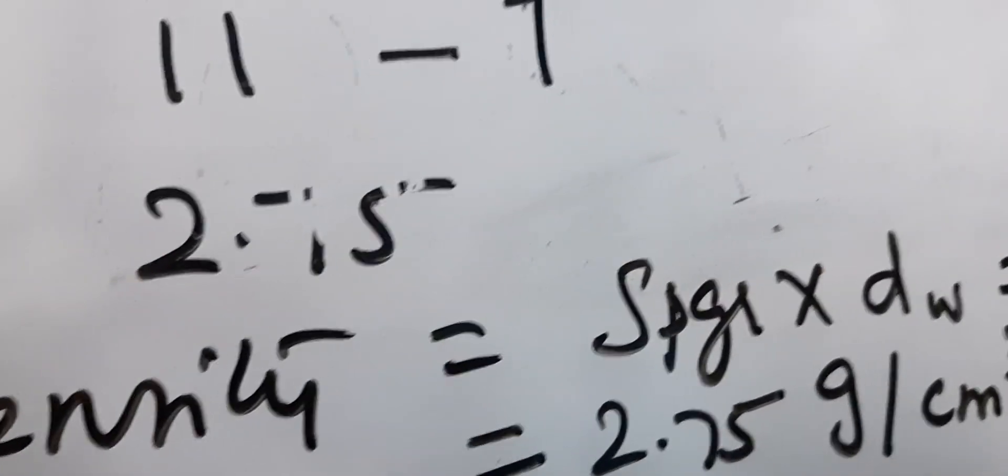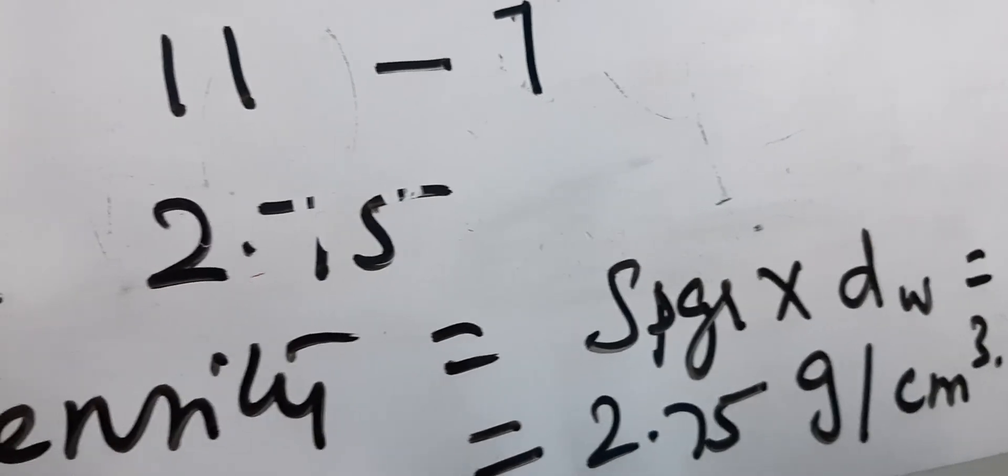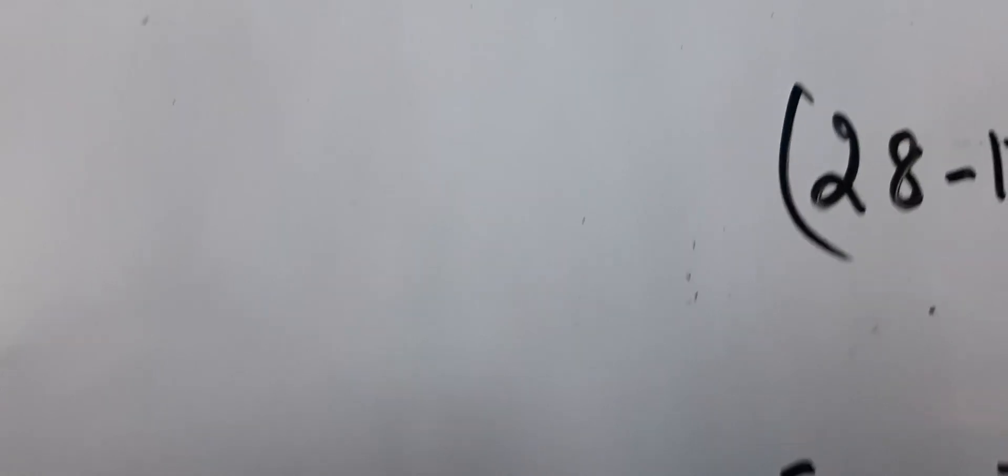That multiplied by the density of water, one gram per cc, you'll get the apparent density: 2.75 grams per centimeter cube.